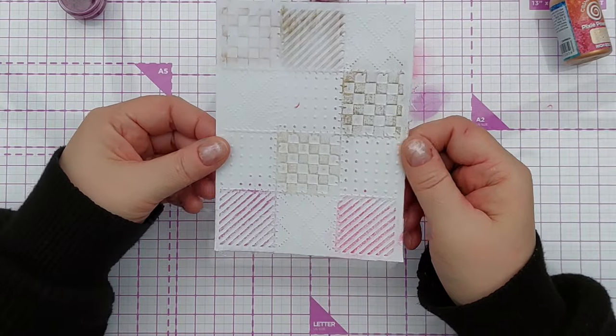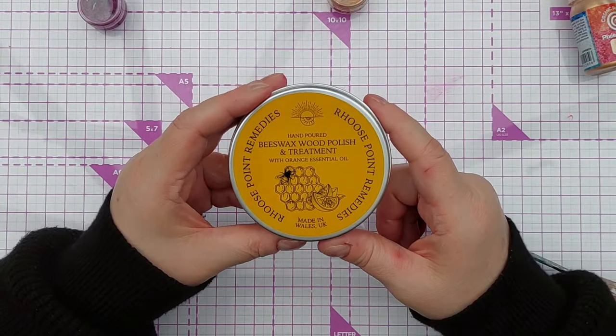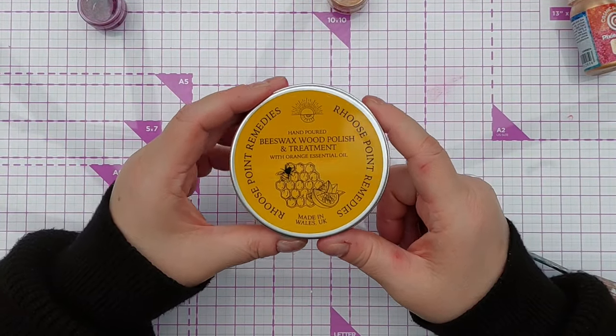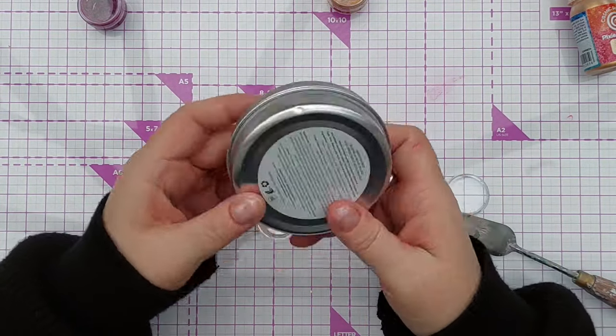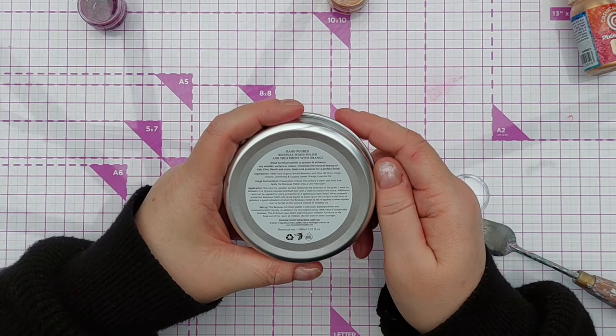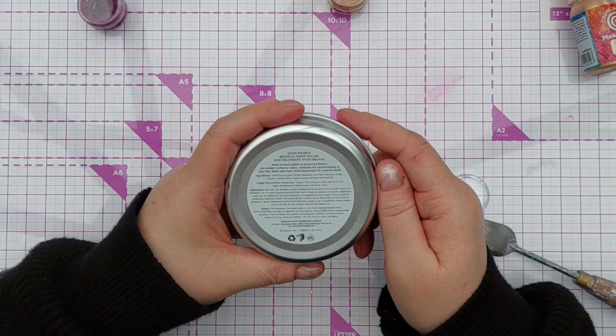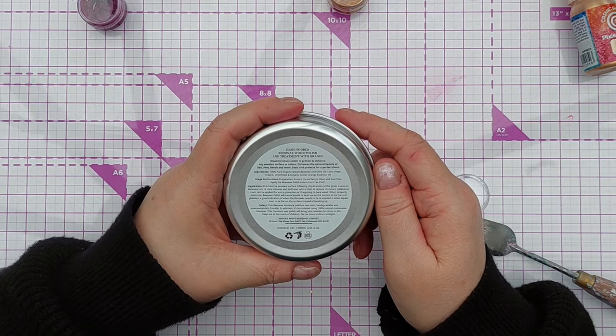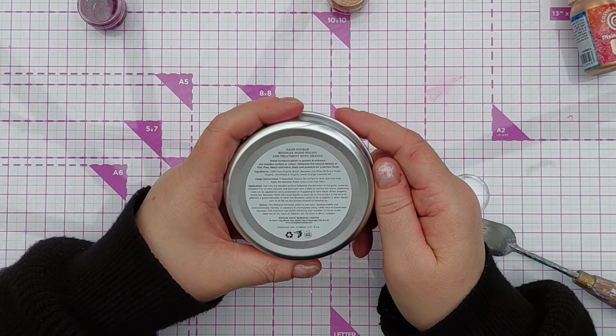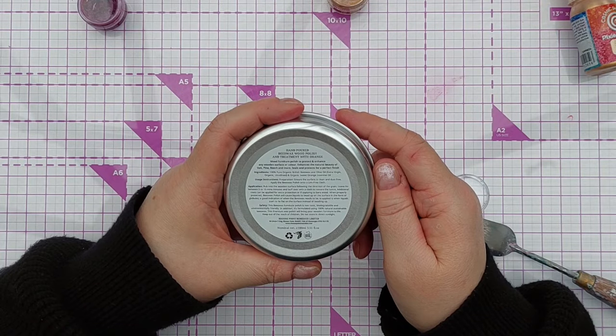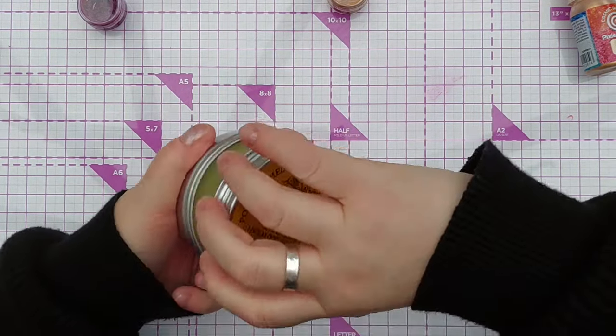I'll show you how I made them. This is what I've been using to make my own gilding or luster wax, and it's hand poured beeswax wood polish and treatment. It is made of 100% pure organic British beeswax and olive oil with some organic sweet orange essential oil. It's non-toxic, biodegradable, and environmentally friendly, and made from sustainable beeswax, so it's an all-round good choice I think.